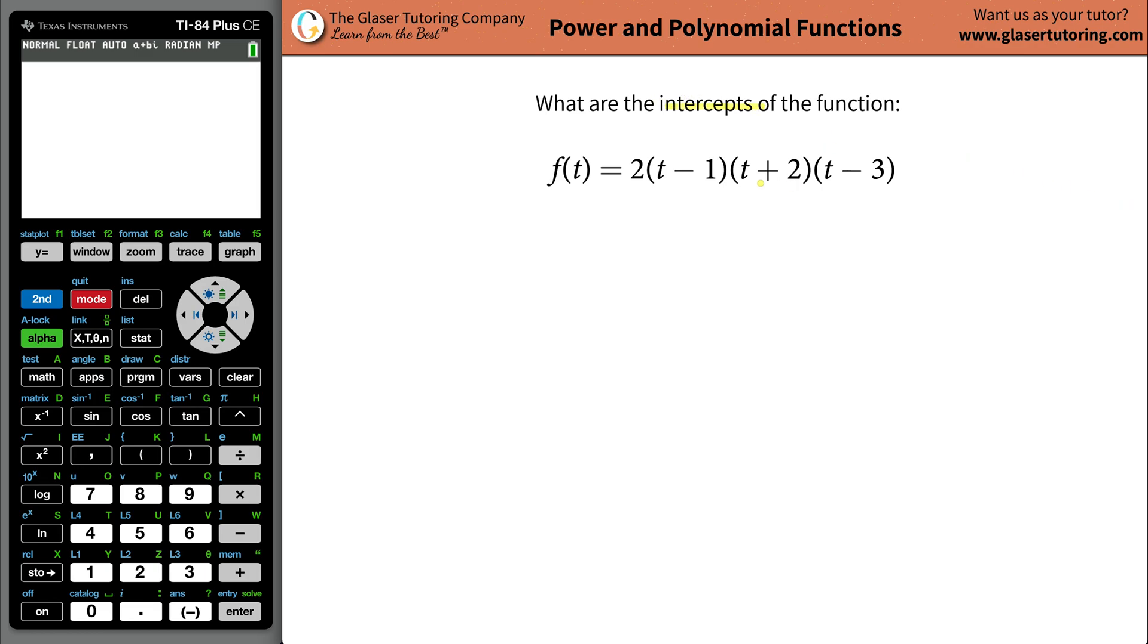What are the intercepts of the function f of t equals 2 times t minus 1 times t plus 2 times t minus 3?